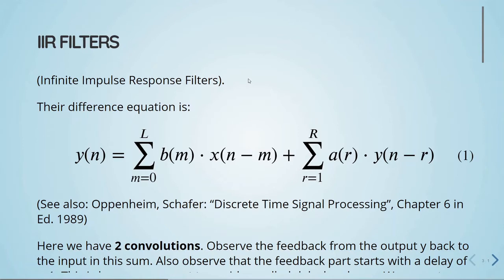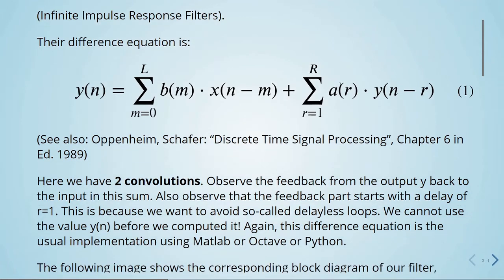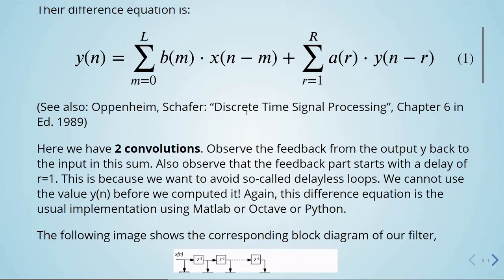We've seen the finite impulse response filters, but there are also the infinite impulse response filters — IIR filters. The difference equation is given by this equation. You can take a look at the book from Professor Oppenheim, Discrete Time Signal Processing, chapter six in the 1989 edition. We see we have two convolutions, and we can observe the feedback from the output y back to the input in this sum. The feedback part starts with a delay of r equals one, because we want to avoid delayless loops — we cannot use the value y of n before we have computed it. This difference equation is the usual implementation of filters using MATLAB, Octave, or Python.